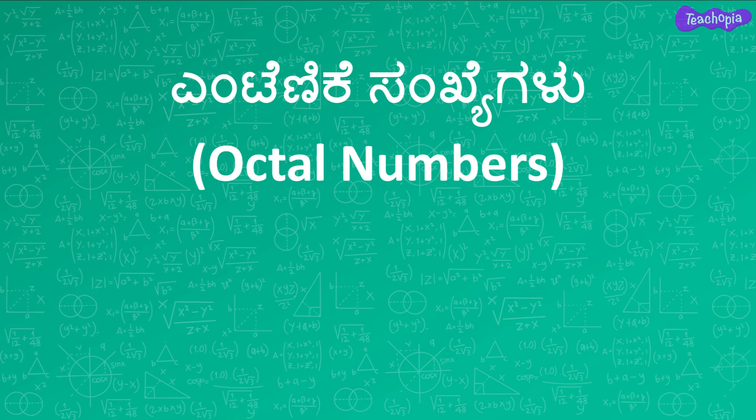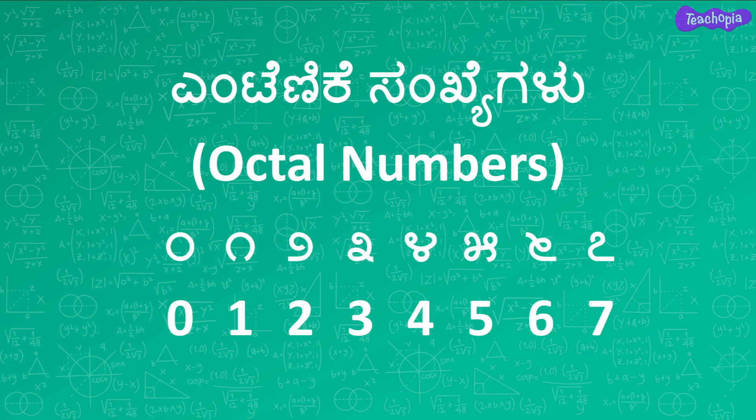Octal Numbers. In this number system, we use 8 digits to represent the number of objects. The digits used are from 0 to 7. We make groups of 8 and the place value increases by a factor of 8 as we move from right to left in the number.